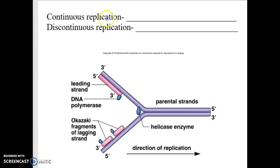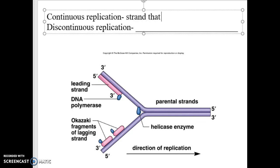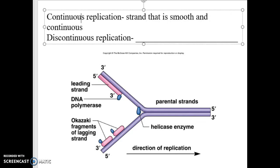So, with replication, they mentioned continuous and discontinuous. Continuous replication will occur on the strand that is smooth and continuous. So, its DNA will just replicate, replicate, replicate, replicate, and attaching the new bases, because it's following the five to three direction with the new letters.